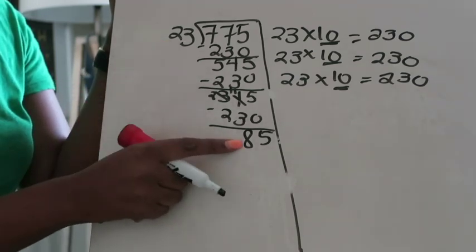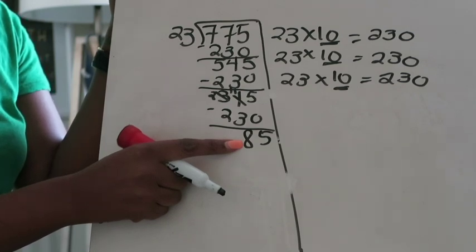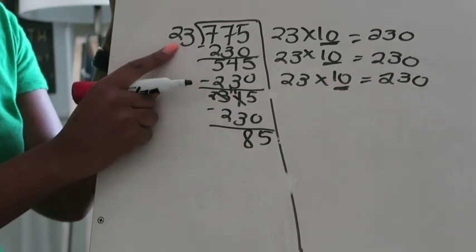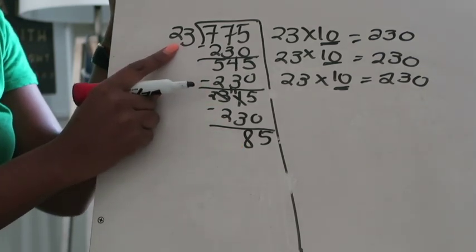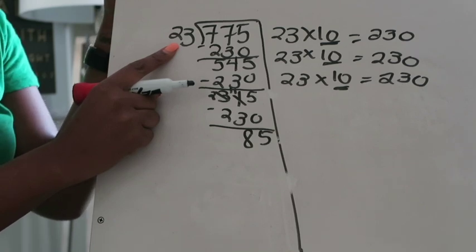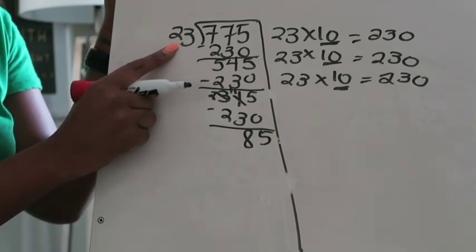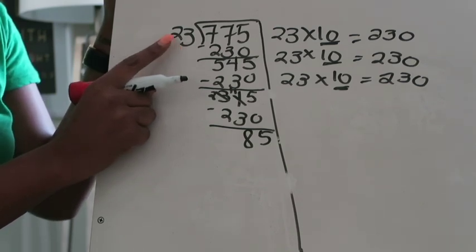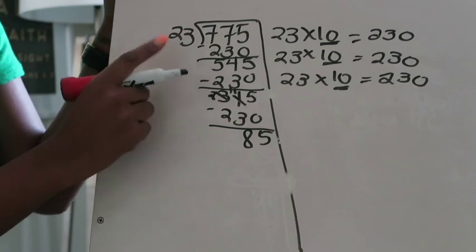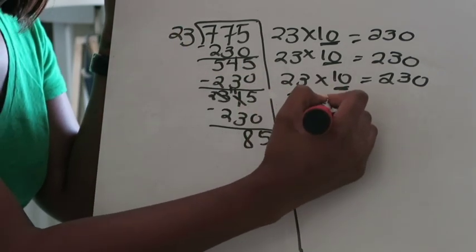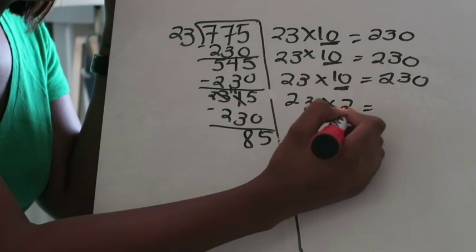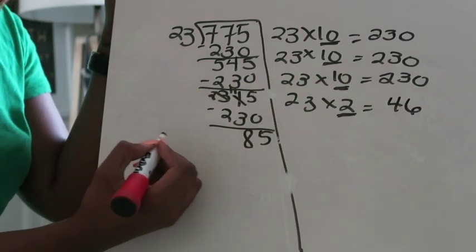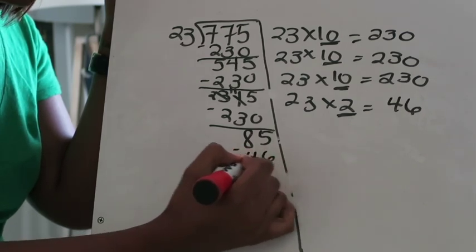Now you realize you cannot multiply 23 times 10 and subtract that product from 85. So I'm going to multiply 23 by something else. If I think about estimation I know 20 times 2 is 40, so multiplying 23 times 2 is going to be pretty safe. 23 times 2, underline that 2, that's 46. Subtract 46 from 85.